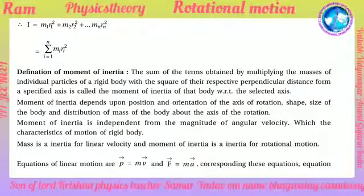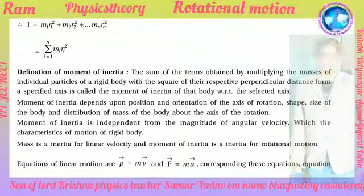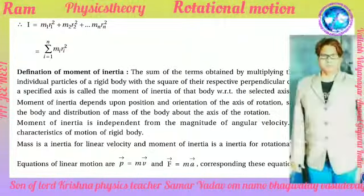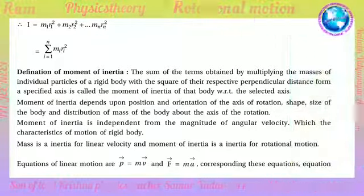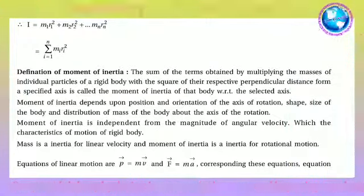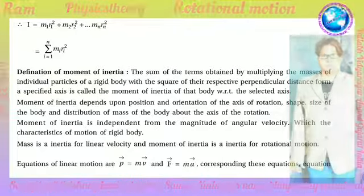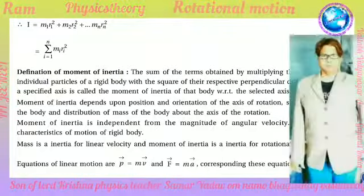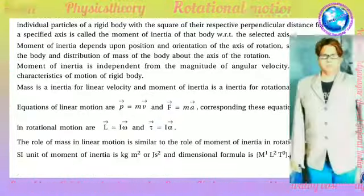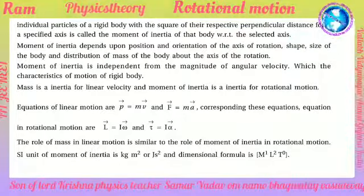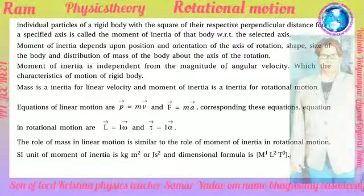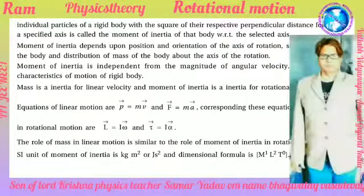Moment of inertia depends upon the position and orientation of the axis of rotation, the shape and size of the body, and the distribution of masses of the body about the axis of rotation. Moment of inertia is independent of the magnitude of angular velocity, which is a characteristic of the motion of the rigid body. Mass is the inertia for linear velocity and momentum; moment of inertia is the inertia of rotational motion.